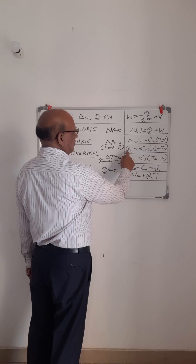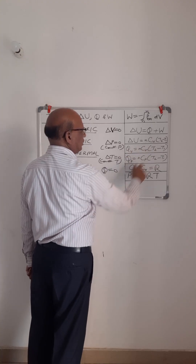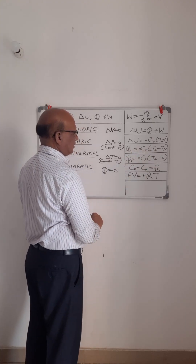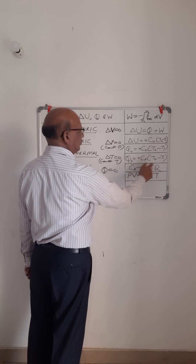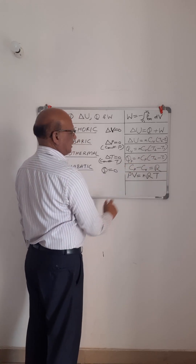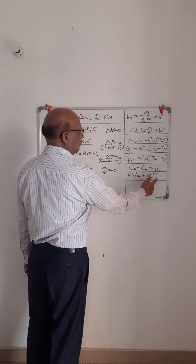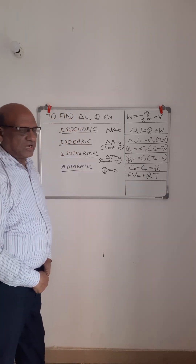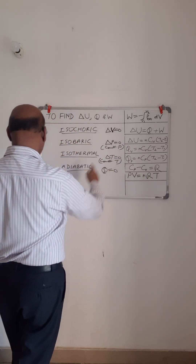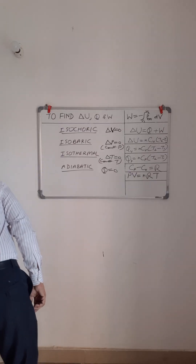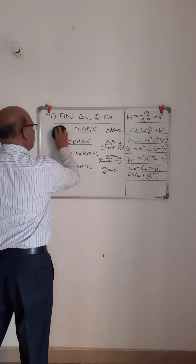Heat exchange at constant volume is given by NcV(T2 minus T1), and heat exchange at constant pressure is given by NcP(T2 minus T1). Also, Cp minus Cv equals R, and PV equals NRT, which is the ideal gas equation. We will use these equations for change in internal energy, heat exchange, and work done.